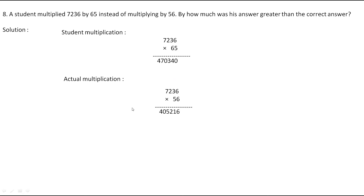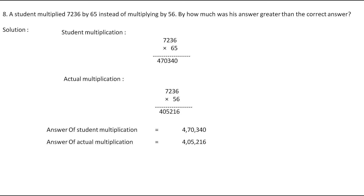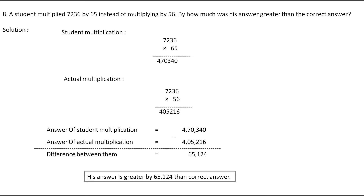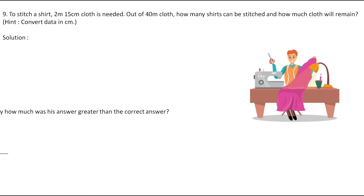The answer of the student's multiplication is 4,70,340 and the answer of the actual multiplication is 4,05,216. Performing the subtraction gives the difference as 65,124. So the final answer for this question is: his answer is greater by 65,124 than the correct answer.